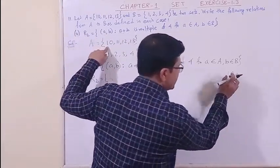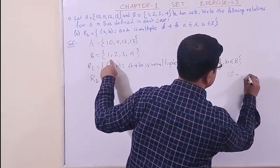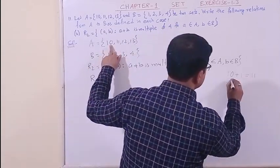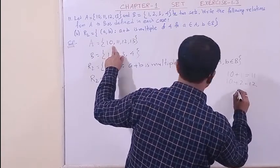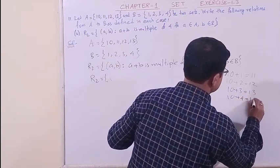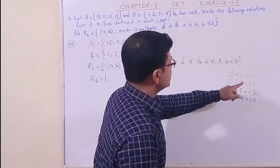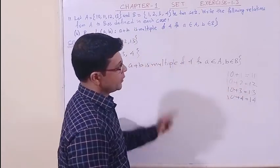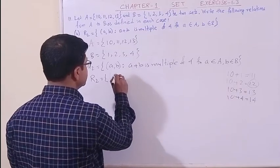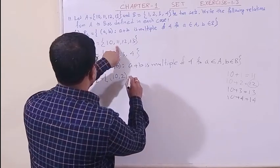10 plus 1. This is the first component of the first element from the first set and the second component will be 1 from the second set. That gives 11. Then 10 plus 2 is 12. 10 plus 3 is 13. 10 plus 4 is 14. Now, if you look carefully at these four numbers, among these four, which number is divisible by 4? Only this one, 14. So the component is (10, 2). That's it. Then this is fixed.